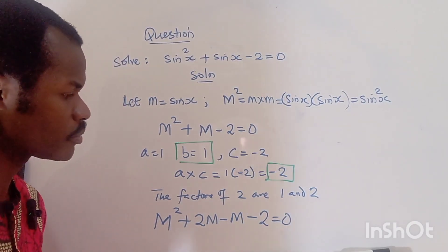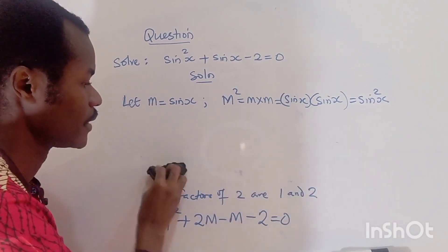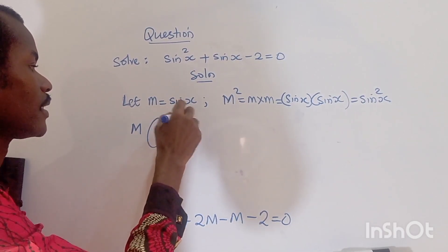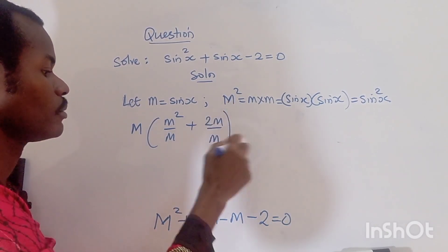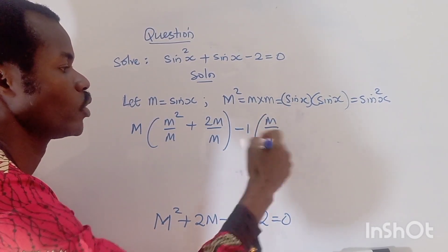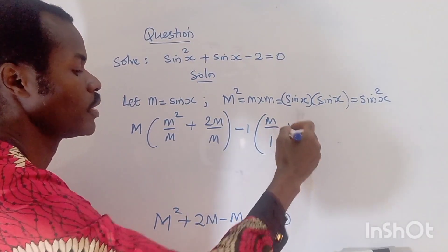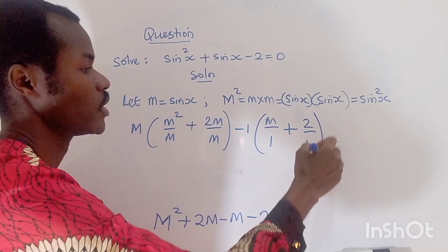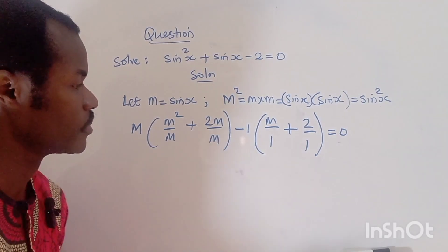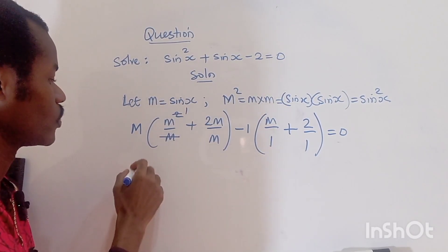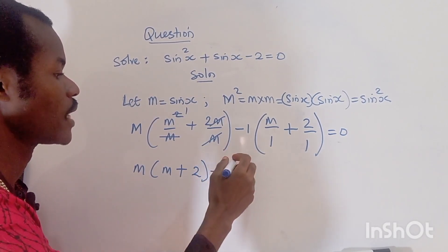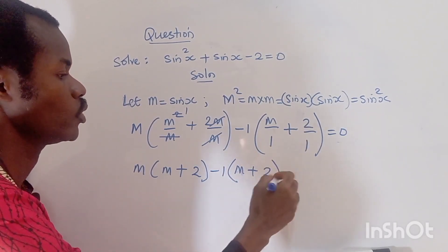Now we factorize by grouping. From the first two terms, m is common: we get m(m plus two). From the last two terms, minus one is common: we get minus one(m plus two). So we have m(m plus two) minus one(m plus two) equals zero.